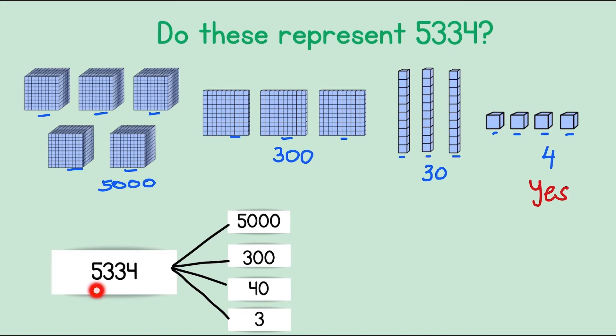Let's check the next one. 5,334 has been split into 5,343. Let's put them together. 5,343. But that's not correct because we need 34. So this one is not the correct representation for our number.